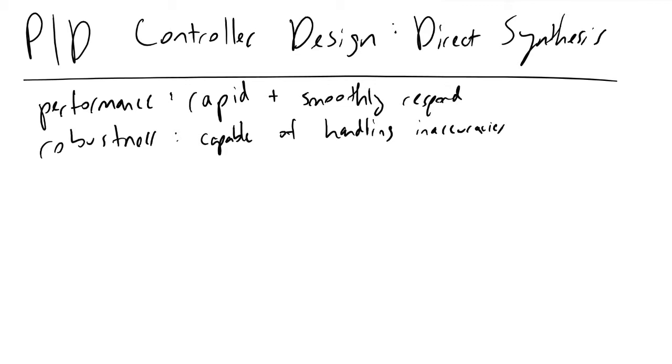So if we design a process to have the best possible performance, we do so at the cost of robustness. If there are any inaccuracies in our model, we are putting ourselves in serious jeopardy with our controller design.